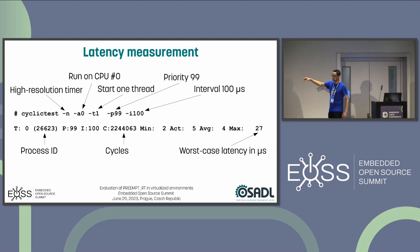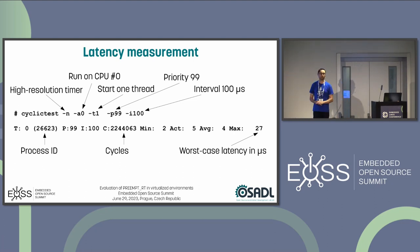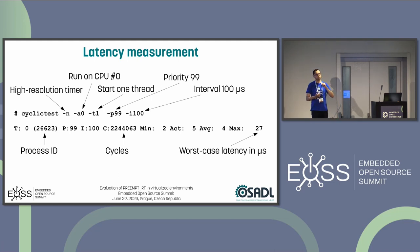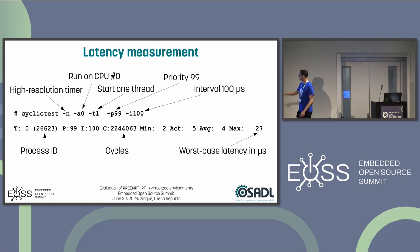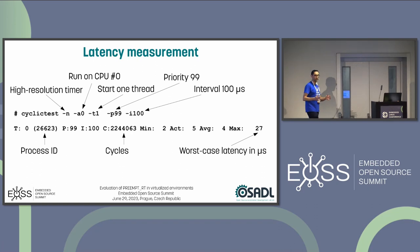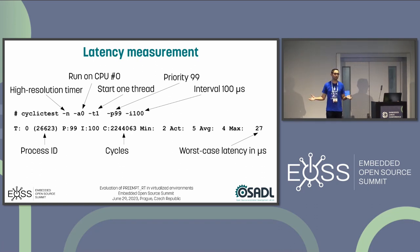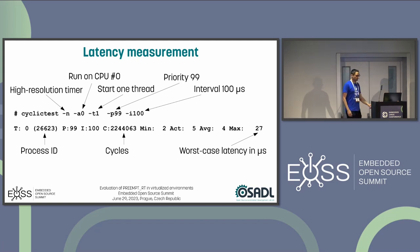Cyclic test is a simple command-line tool. You give a few parameters: the wake-up interval, the priority, the number of threads, and which CPUs to run on. Most importantly, it reports the worst-case latency reached over the runtime — that's the number you're interested in. What's the worst case you could see in different load scenarios?